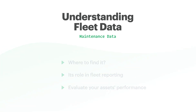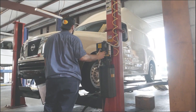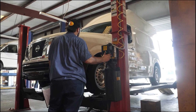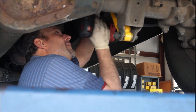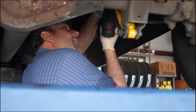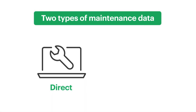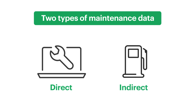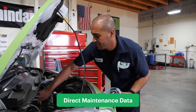So let's talk a little bit about classifying maintenance data. Maintenance is at the core of fleet operations, so there are a lot of different places to find maintenance data. Let's check out two primary categories. The first is direct maintenance data.